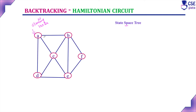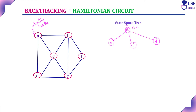For this Hamiltonian circuit problem, consider the starting vertex A as the root of the state space tree. From A, we need to visit all other vertices exactly only once and return back to the starting vertex. From A, there are three edges — it is possible to visit B, C, or D. First, we will consider through vertex B, since the state space tree follows depth-first search. From B, there are three edges: C, E, F — so we can visit C, E, or F.